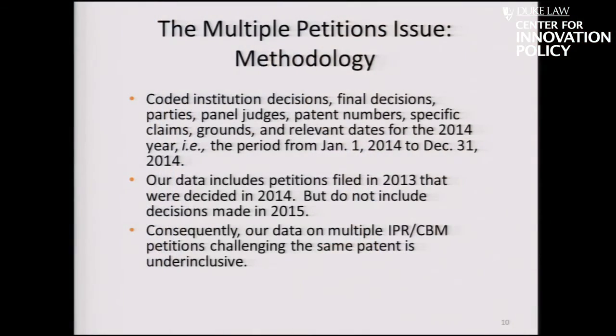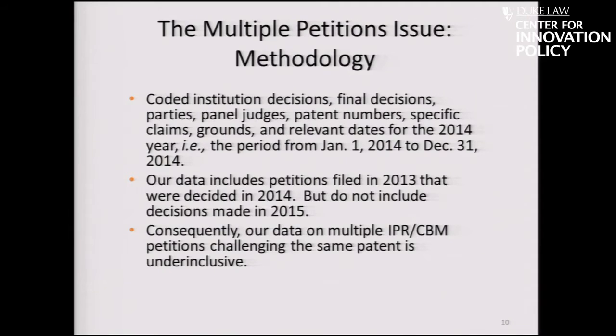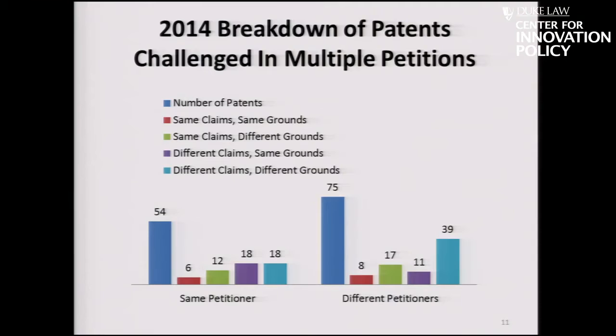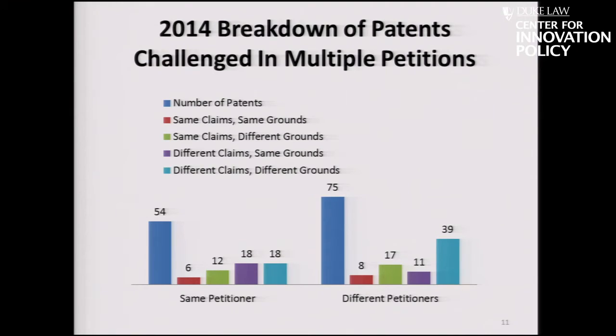We continue to look at the issue of multiple challenges to the same patent and focused on coding as much information as possible for 2014 — including institution decisions and final decisions for IPRs filed in 2013, though not petitions filed in the last part of 2014, which would be decided in 2015. Here's the breakdown. The focus is on the number of patents, not the number of petitions. On the left-hand side, you see that there are 54 patents that were challenged by the same petitioner two or more times.